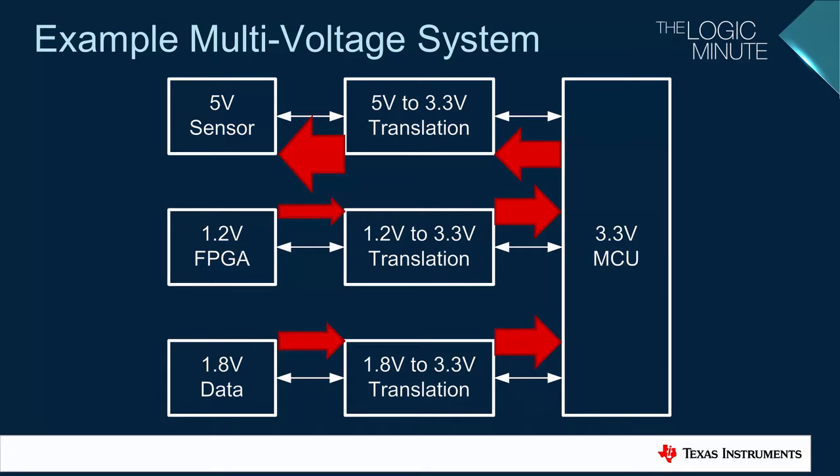The arrow widths are relative to the voltage at that point in the circuit. There are also three down translation paths, shown here with blue arrows. This system would typically require at least three translators.